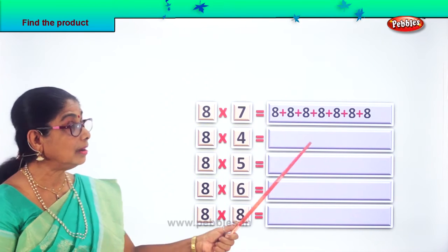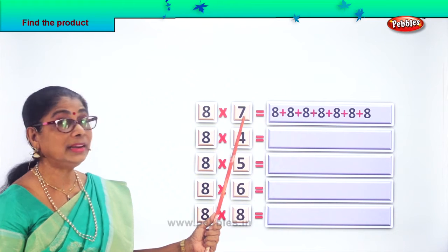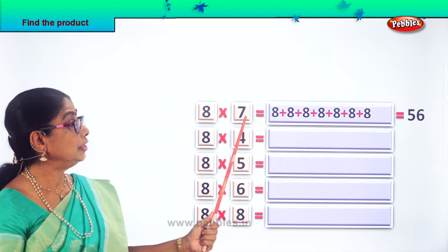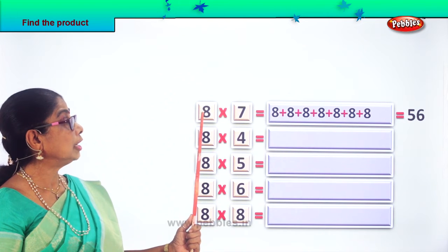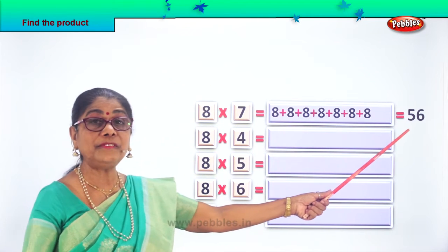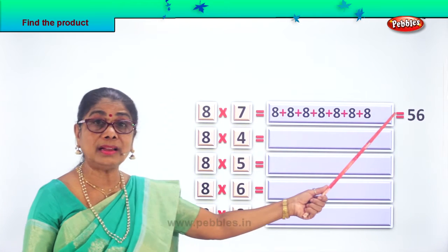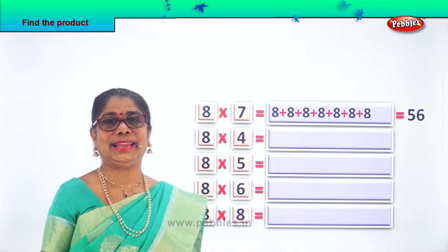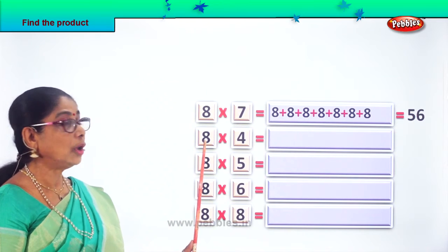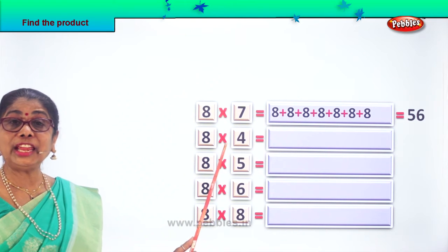8 sevens — and you get the answer. 8 into 7 using repeated addition. The product of 8 into 7 gives you the answer 56. What is 8 into 4?